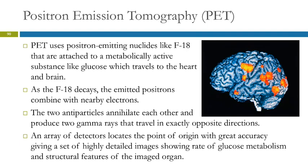As it decays, the positrons that get emitted combine with nearby electrons, annihilate each other, and produce two gamma rays. The key feature is that those two gamma rays travel in exactly opposite directions from each other. This allows you to get a very detailed set of images showing the rate of glucose metabolism and structural features of the organ.